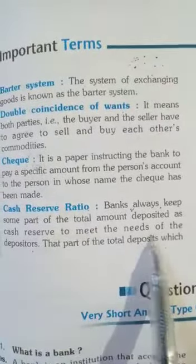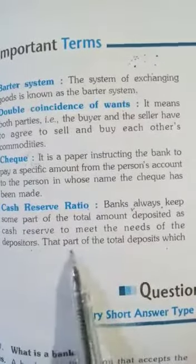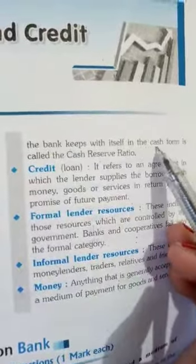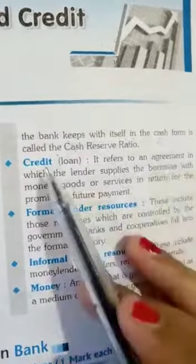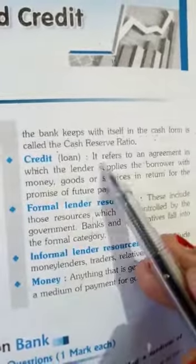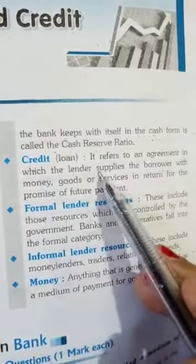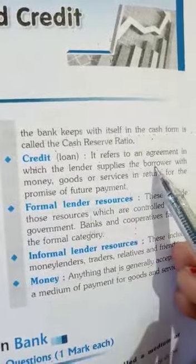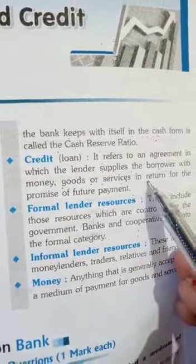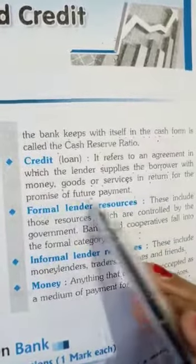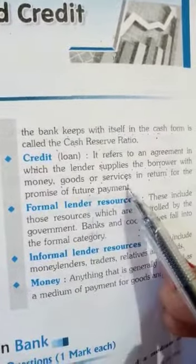That part of total deposit which the bank keeps with itself in cash form is called the Cash Reserve Ratio. Credit — you all know it refers to an agreement in which the lender supplies the borrower with money, goods or services in return for the promise of future payment.